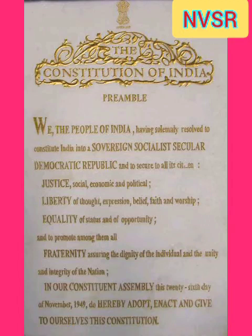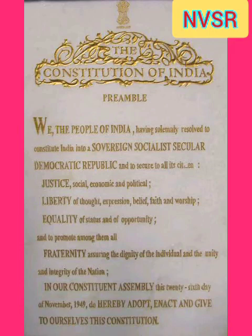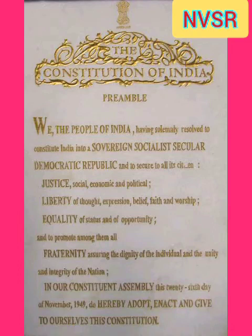Like any other part of the Constitution, the Preamble was also enacted by the Constituent Assembly, but after the rest of the Constitution was already enacted. The reason for inserting the Preamble at the end was to ensure it was in conformity with the Constitution as accepted by the Constituent Assembly. While voting on the Preamble, the President of the Constituent Assembly said: 'The question is that the Preamble stands as part of the Constitution.' The motion was duly adopted. Hence, the current opinion held by the Supreme Court — that the Preamble is a part of the Constitution — is in consonance with the opinion of the founding fathers. However, two things should be noted: the Preamble is neither a source of power to the legislature nor a prohibition upon the powers of the legislature; and it is non-justiciable, that is, its provisions are not enforceable in the courts of law.